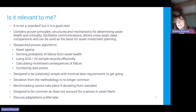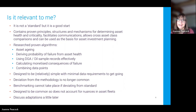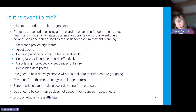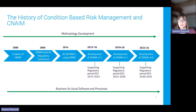CNAIM is designed to be common, so it doesn't allow for nuances in asset fleets. The network operators in the UK accept that to be common they can't have special cases — it's one of the reasons it's simpler. That's also why adaptations are needed, which we'll now discuss.